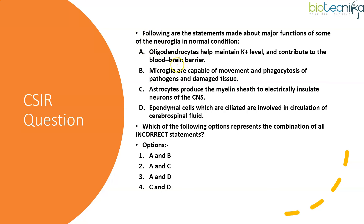The first question is a statement-based question related to neuroglial cells. It says: following are statements about major functions of some neuroglia in normal condition. Statement A: oligodendrocytes help maintain potassium level and contribute to the blood-brain barrier. Statement B: microglia are capable of movement and phagocytosis of pathogens and damaged tissue. Statement C: astrocytes produce the myelin sheath to electrically insulate neurons of the central nervous system. Statement D: ependymal cells, which are ciliated, are involved in circulation of cerebrospinal fluid. The question asks: which combination represents all incorrect statements?